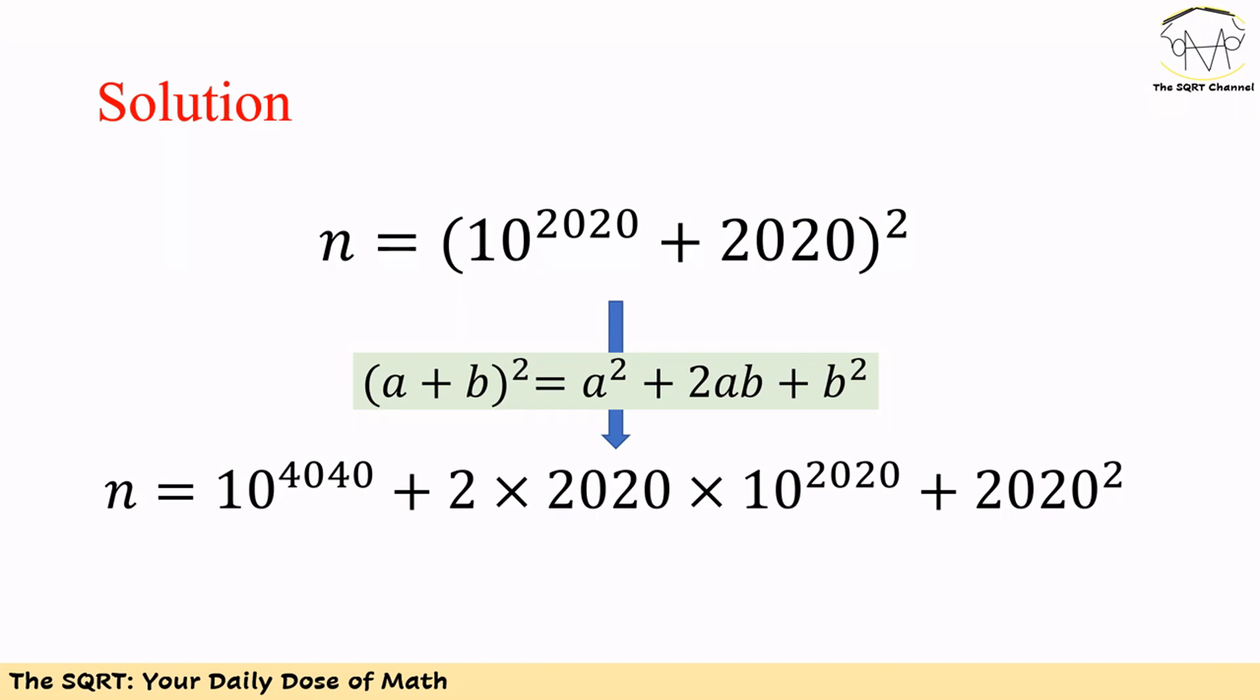If we use this identity, we get n = 10^4040 + 2 × 2020 × 10^2020 + 2020^2.